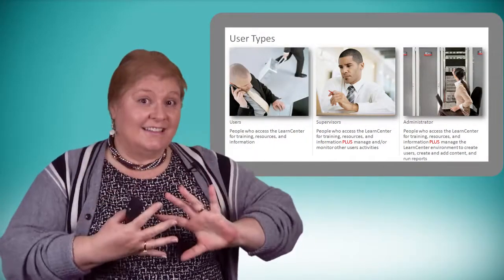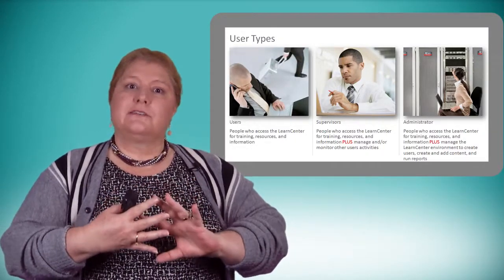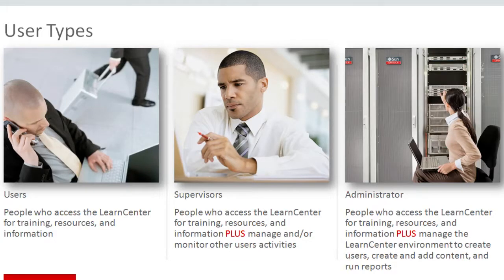We combine all of that with the different user types. There are three different types of users working in the system. The most basic and prolific is just a standard user — they come into the system, access their learning, or the learning is pushed to them via messages and content activity. Then we can combine that with the supervisor, who are not only users of the system but also people that manage other users' activities. They may need to run reports, monitor certain screens, and work with the team aspects of the learn center.